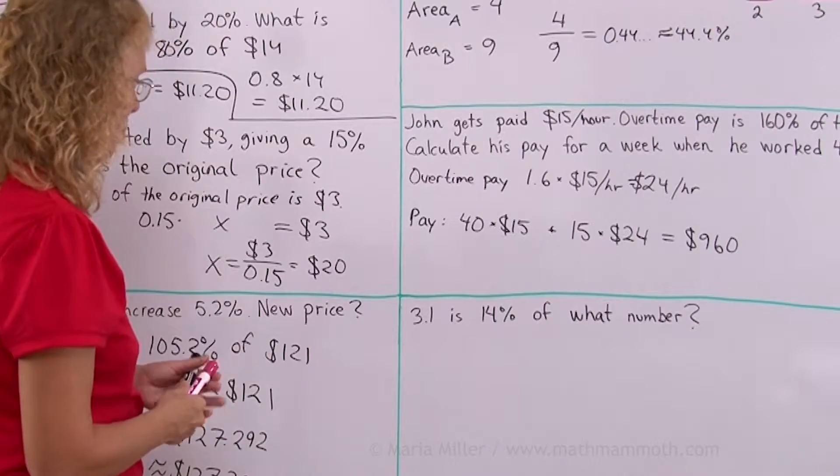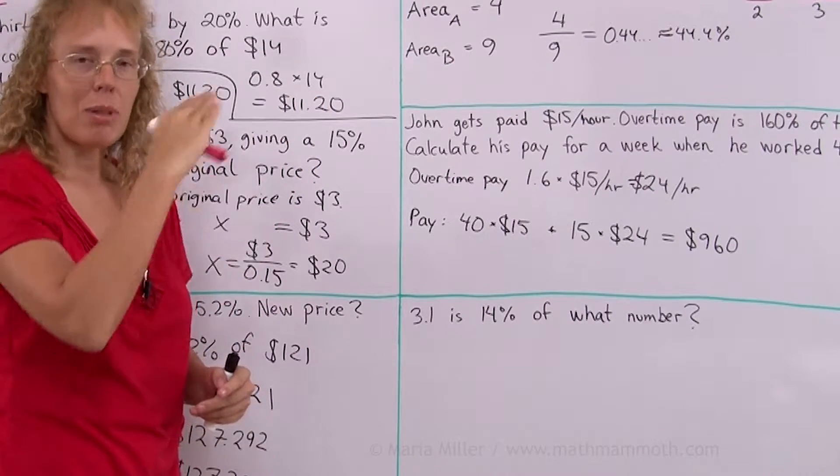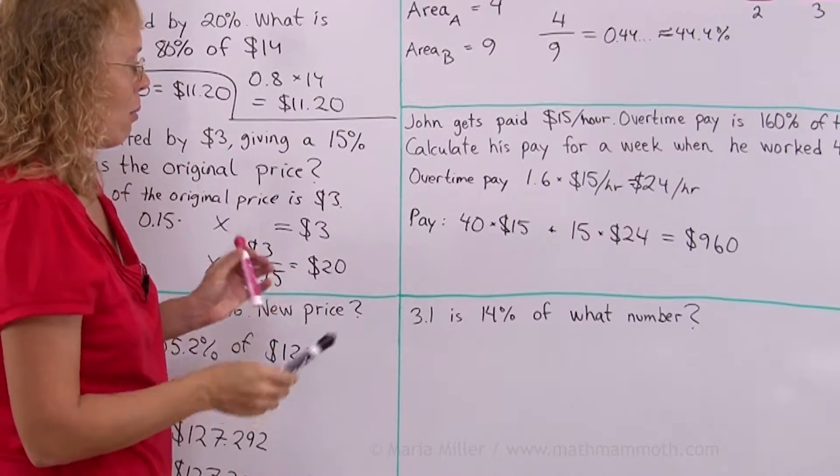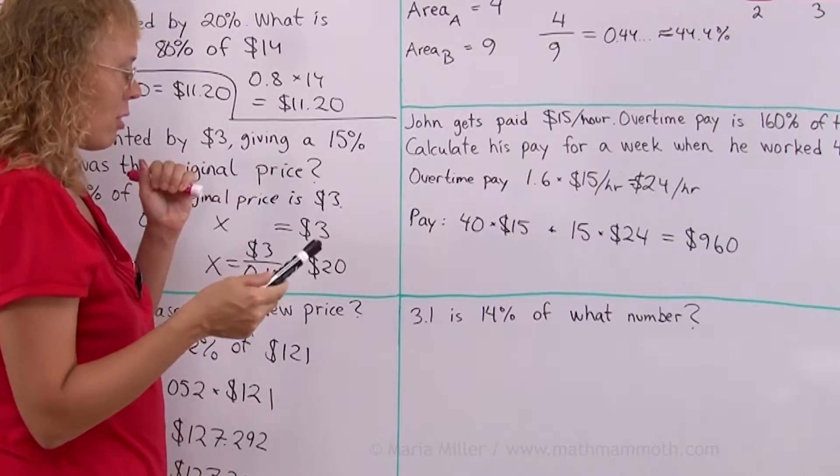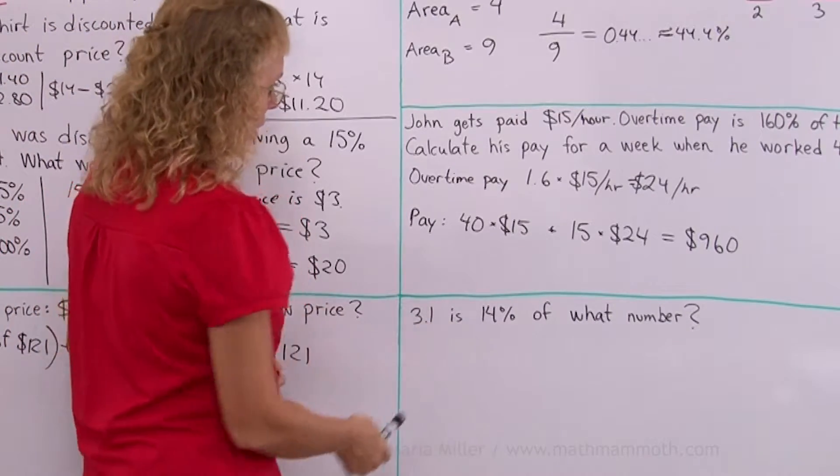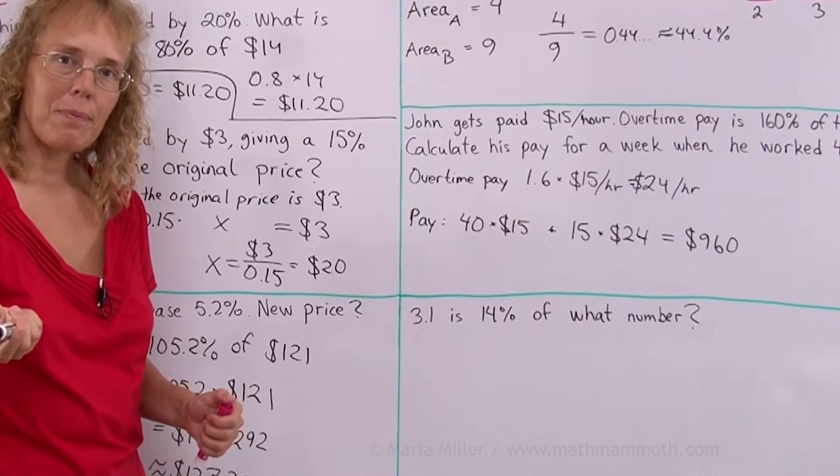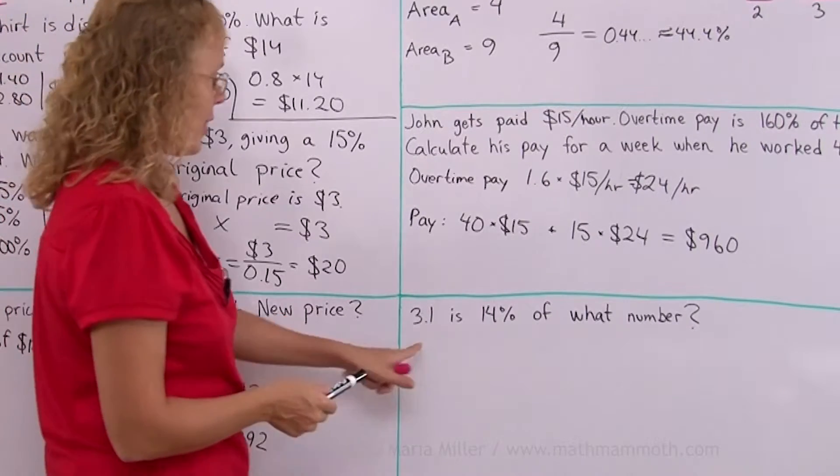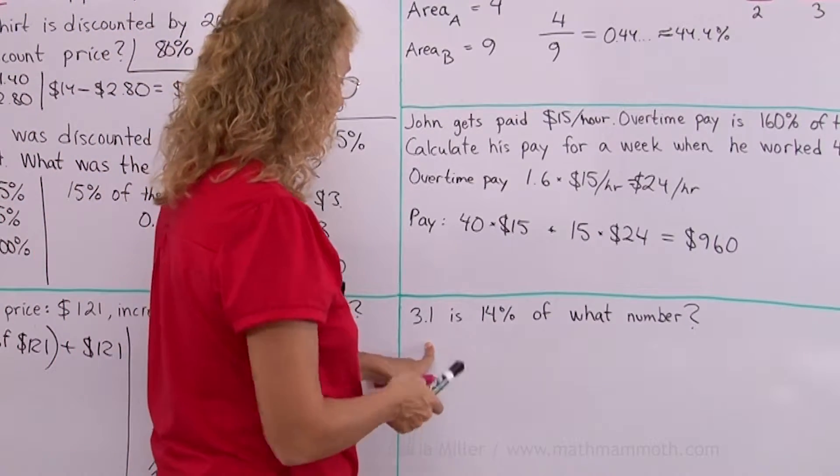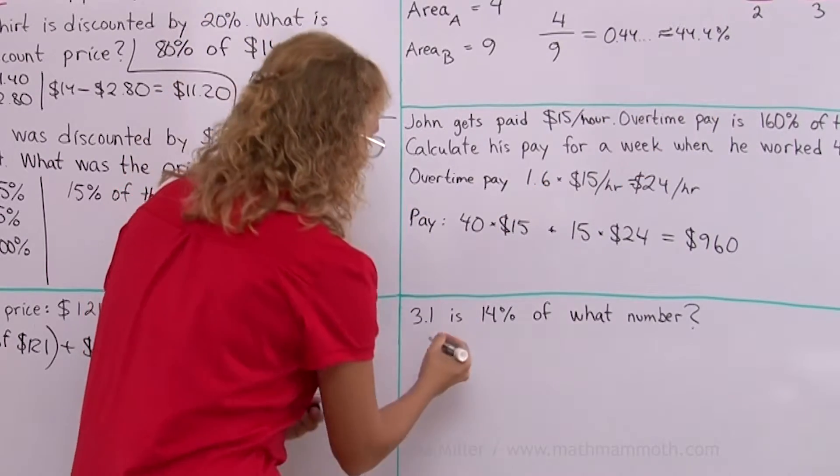Okay. I want you to think of this part over total being the percentage. Again, part over total. What is missing here? The part or the total or the percentage? Well, the percentage is given. So is it the part or the total that's missing? This is the part. This is the smaller amount. And then the total is something more. So we know the part.